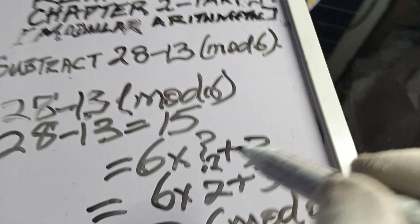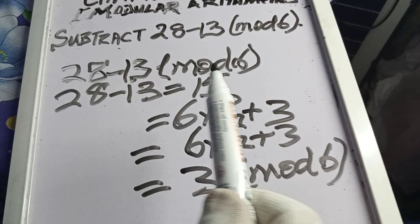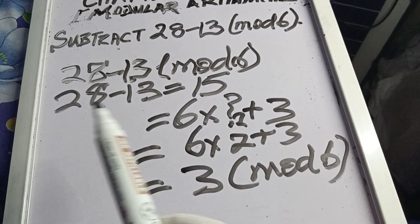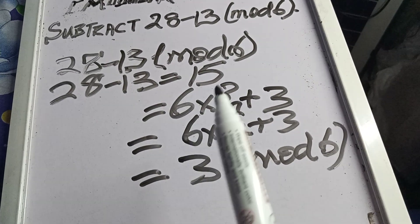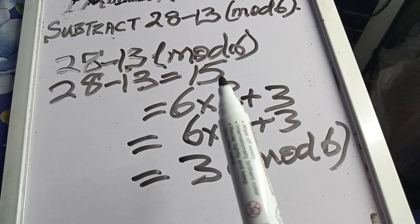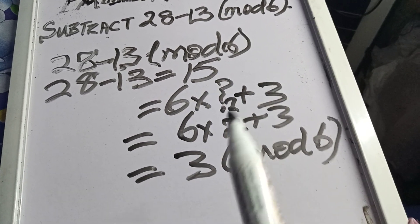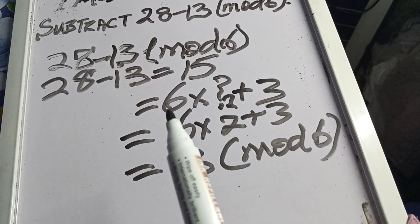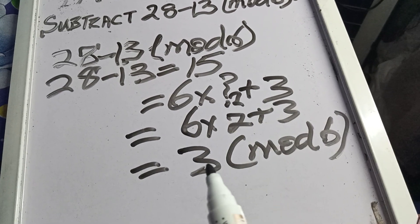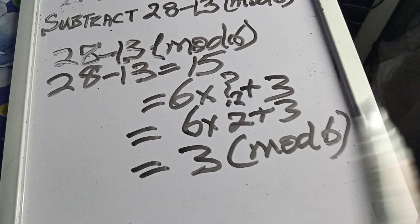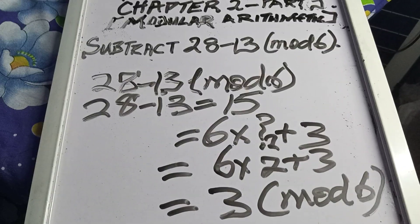Okay, look at it — we have this question. 28 minus 13 is 15. Now, 6 into 15: 6 goes 2 times, that is 12, remaining 3. So the answer is 3, remainder mod 6. That's the answer — very easy.